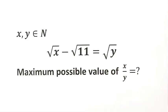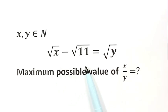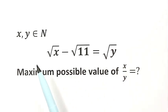In this video, we're going to solve this problem. Given the equation: the square root of x minus the square root of 11 equals the square root of y, where x and y are positive integers. What is the maximum possible value of x over y?